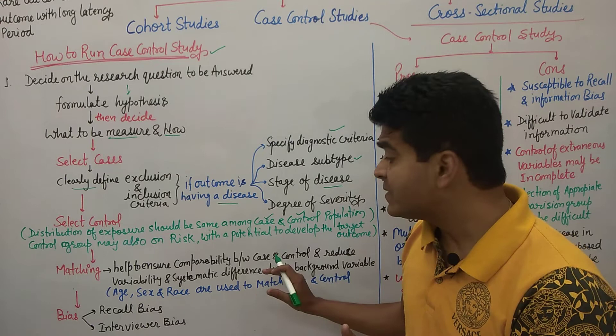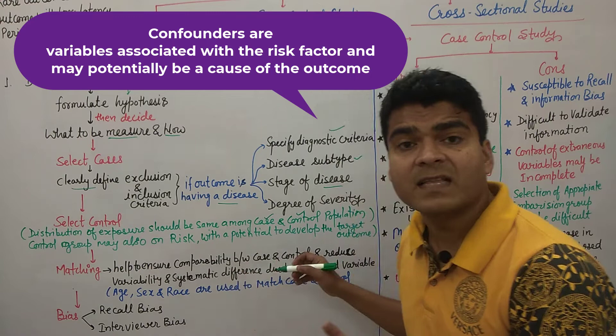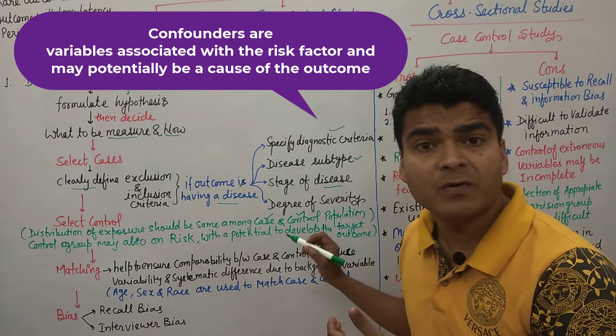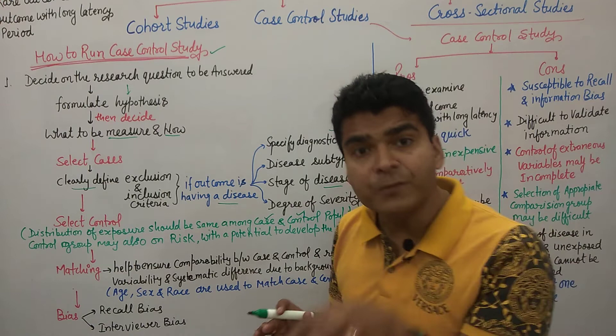Generally, matching is done according to age, sex, and race, because these are confounder variables — variables that can introduce differences in studies due to genetic and demographic background. Controlling these variables ensures better comparison between groups.